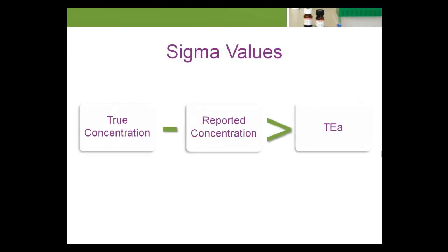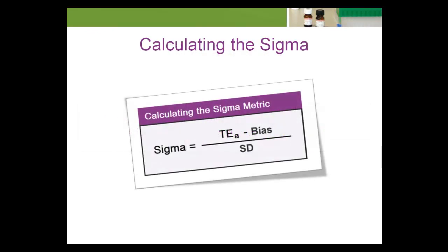Laboratory quality specifications are often defined in terms of allowable total error limits, TEA. If the difference between the true concentration of an analyte and the reported concentration in a patient specimen exceeds TEA, the result is considered unreliable. The sigma value expresses the number of analytical standard deviations of the test system process that fit within the specified allowable total error limits; that is, sigma equals TEA minus bias divided by SD.